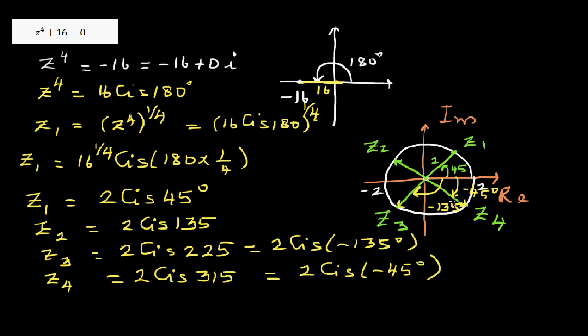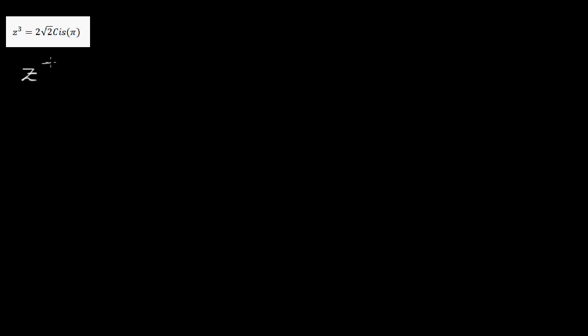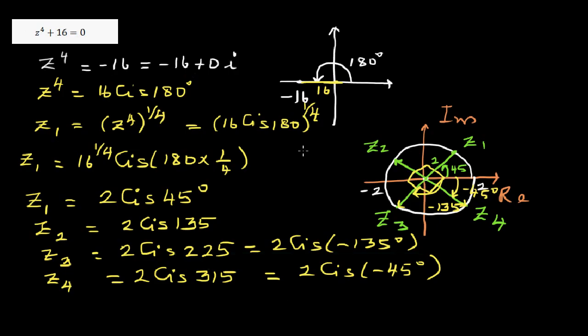The last example is your homework: Z cubed equals 2 root 2 cis pi, which is the same as Z cubed equals 2 root 2 cis 180 degrees. Follow the same process — find Z1 then add 120 degrees each time, because 360 divided by 3 is 120. In the previous example I added 90 degrees because there were 4 roots. The rule is always 360 divided by the number of roots.